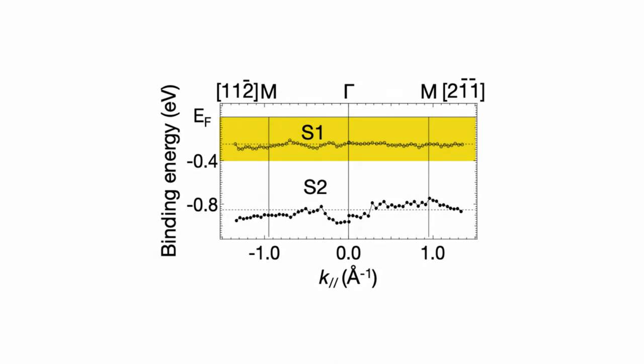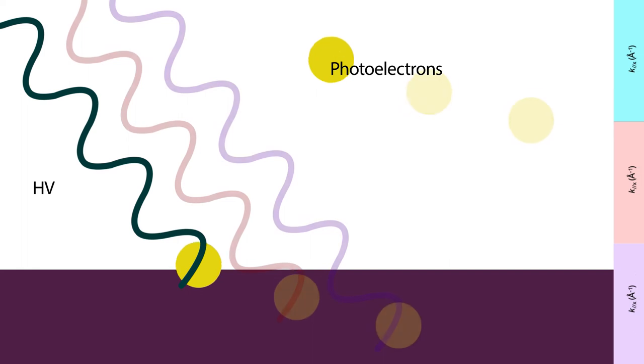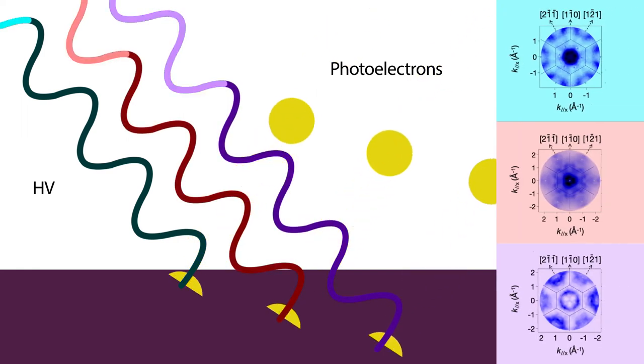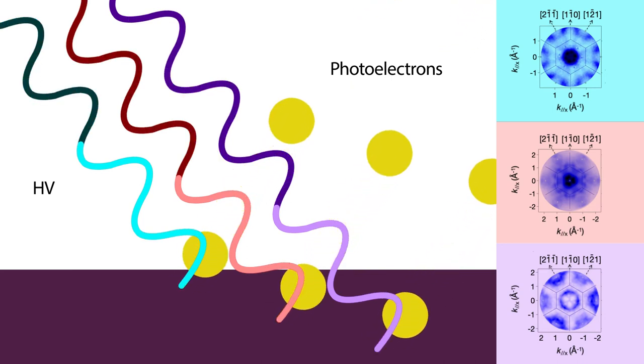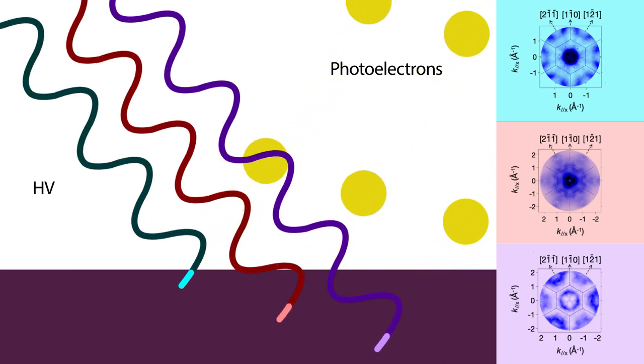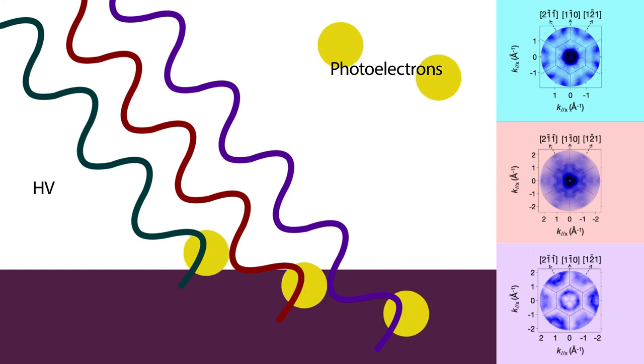But does it really? If the S1 state does cross the Fermi level of the 7x7 surface, the international team reported, then mapping the momentum of emitted photoelectrons as a function of the initial state momentum would produce a map of the 2D Fermi surface itself, and mapping at different photon energies would essentially produce the same picture. But that's not what they observed.